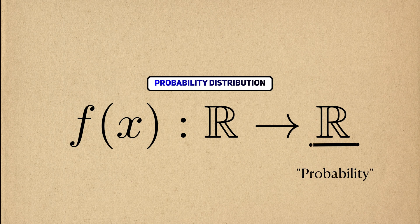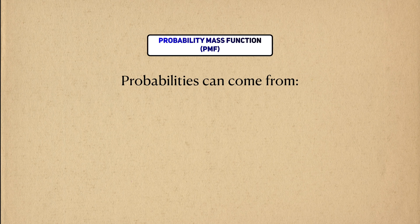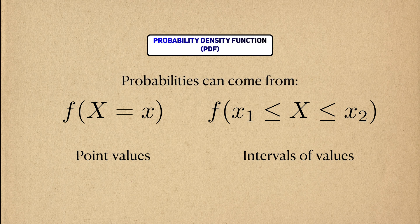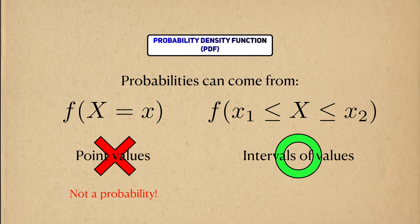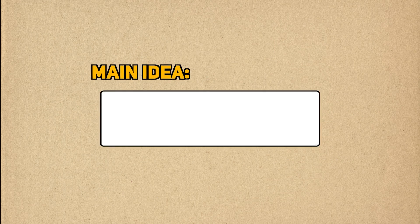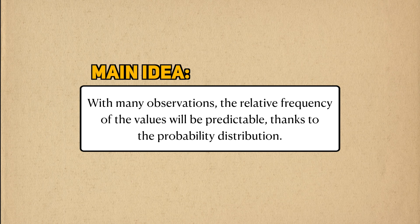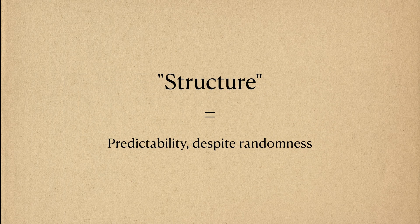Some of you may have noticed that I've avoided using the word 'probability' to describe the output of a probability distribution. That word does apply in the case of the PMF. You can get a probability from both point values and ranges of values. If you want to get a probability from a PDF, you can only talk about that in terms of ranges of values. If you take a point value from a PDF, it's not a probability — it's technically a probability density. It can still tell us that one value is more or less likely than another, but it's not a probability. Even though it's impossible to predict values in a random variable ahead of time, the probability distribution tells us that over many observations, the frequency that they appear will be predictable. And that's what I mean by structure.